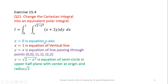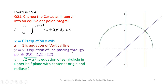x equal to 0 is the equation of the y-axis. x equal to 1 is the equation of a vertical line. y equal to x is the equation of a line passing through points where x and y are equal, such as (0,0), (1,1), (2,2), and so on. y equal to the square root of 2 minus x squared is the equation of a semicircle in the upper half plane with center at the origin and radius square root of 2.